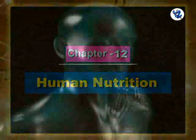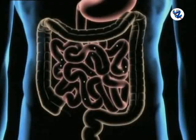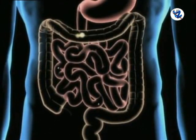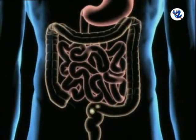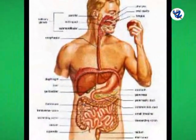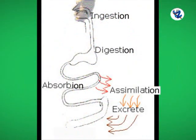Nutrition is the sum total of all processes through which food is taken in, digested, absorbed, utilized, and finally the undigested matter is eliminated outside the body. Nutrition provides energy to the body. The nutrition includes the processes like ingestion, digestion, absorption, assimilation, and egestion, i.e., defecation.